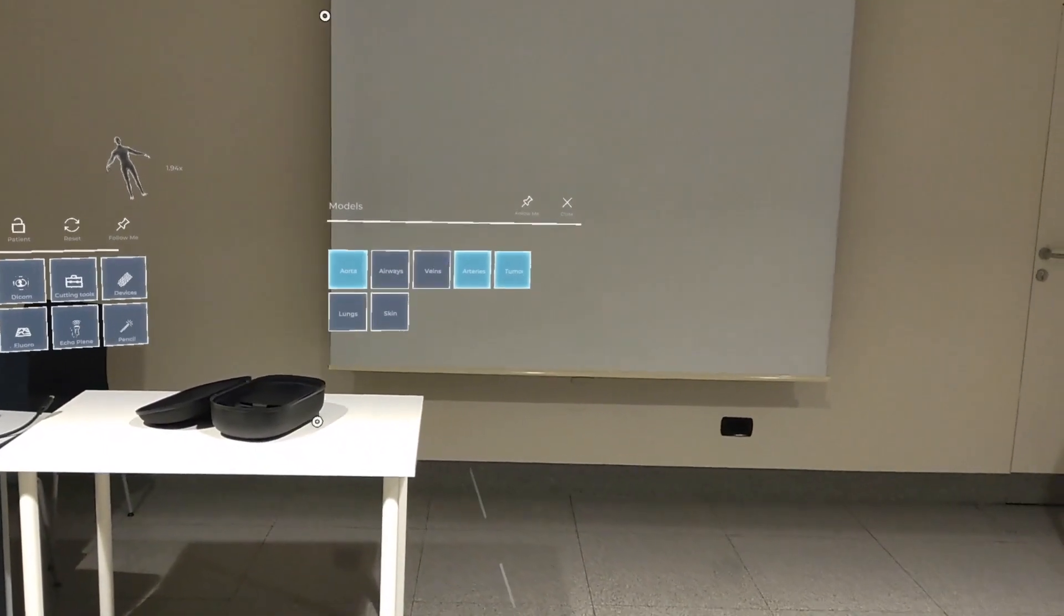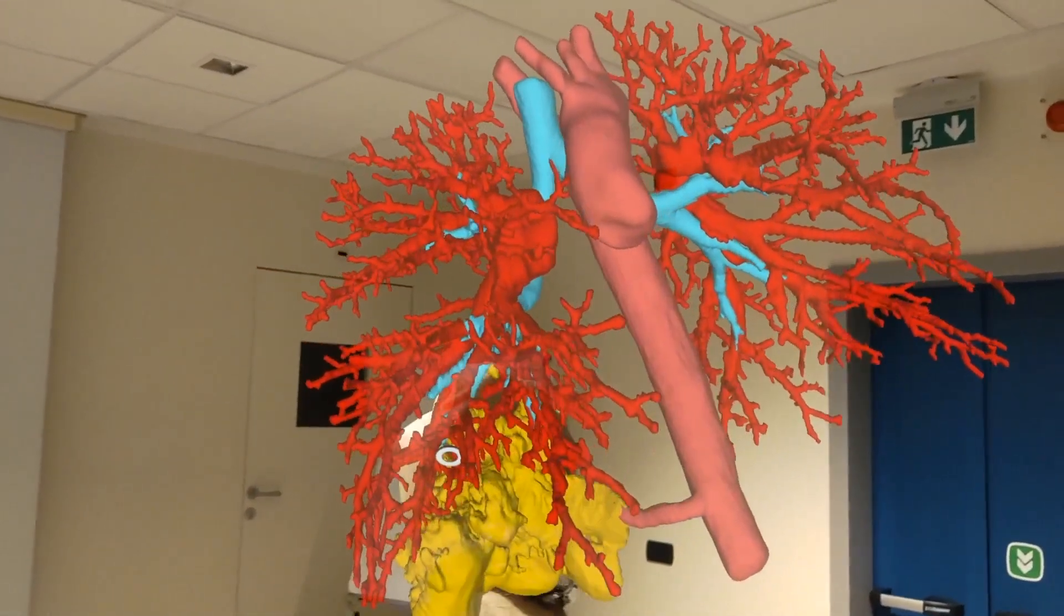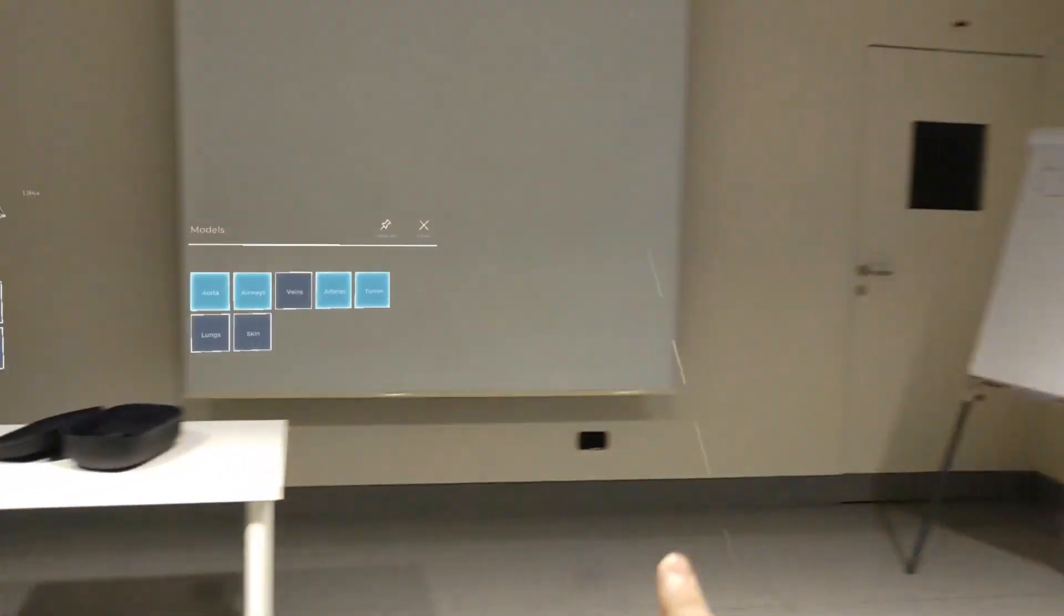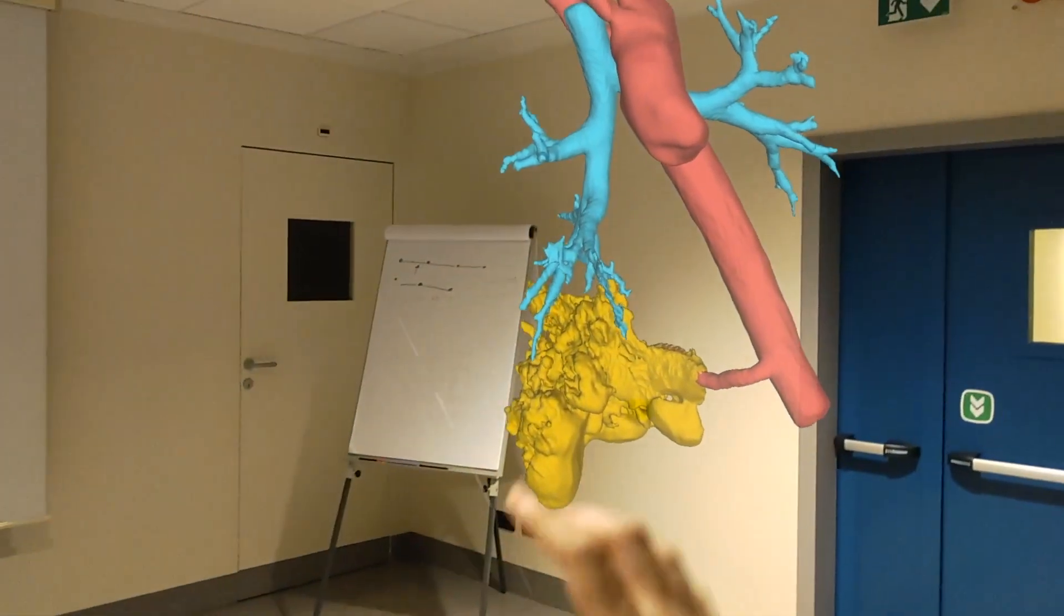Thanks to selective visualization, we can identify all the branches of the pulmonary artery for the right lower lobe. In this case, we have the standard apical, inferior, and basilar trunks.